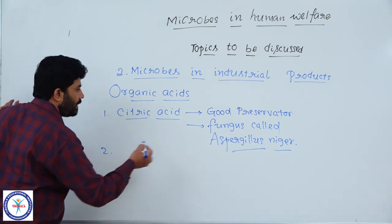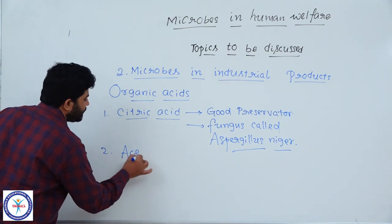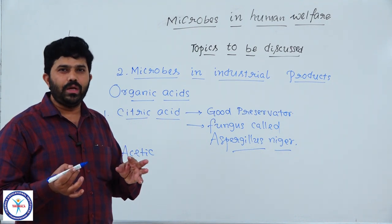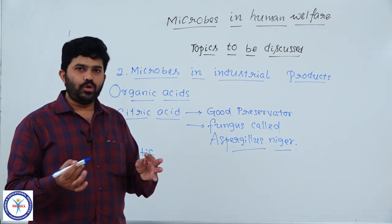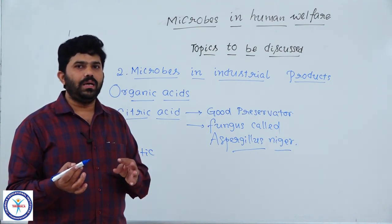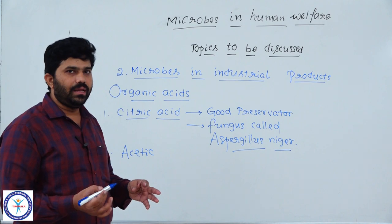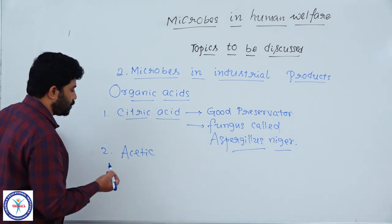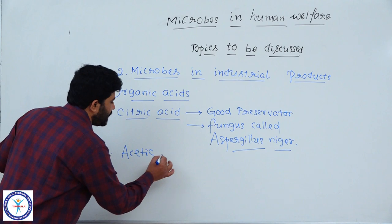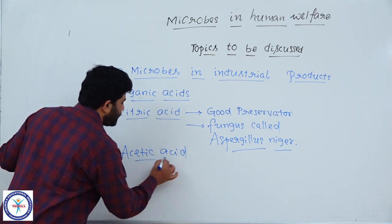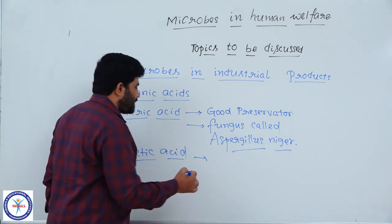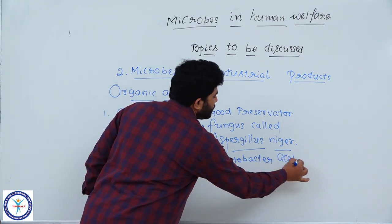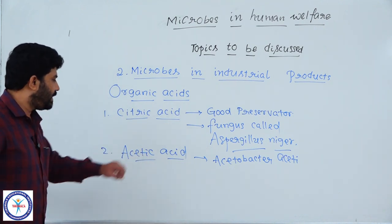Citric acid is also obtained from a fungus called Aspergillus niger. Aspergillus niger is a fungal member which releases citric acid — a very important organic acid in our daily life. The next acid is acetic acid — the acetic acid we use in food materials like vinegar, which adds a sour taste to food. In restaurants and food preparation centers, vinegar is used as a chief material to increase palatability and sour taste. Acetic acid is also obtained from a bacterium called Acetobacter aceti.